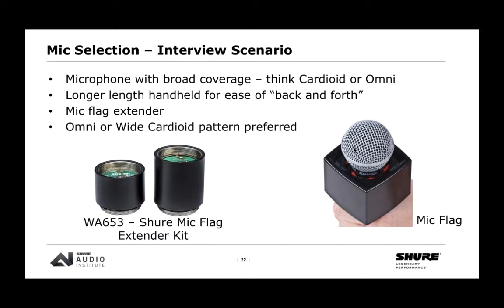The mic flag extender kit addresses a real problem: when you put a mic flag — also called a halo or station identifier with logos like ESPN or CNN — on a microphone, it makes the microphone shorter. Someone with big hands ends up gripping lower on the mic, potentially covering the transmit antenna on a wireless handheld. This hurts performance. The extender kit provides more room for the hand and has become quite popular, especially in sports with larger talent.